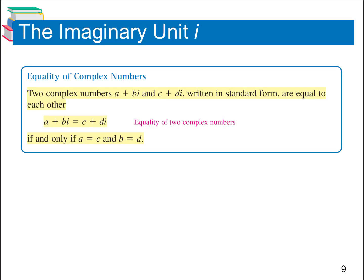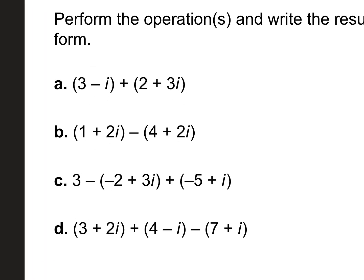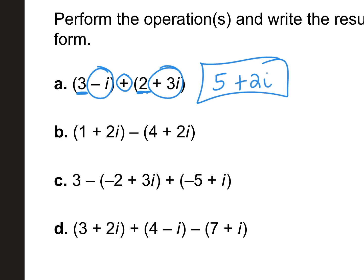Let's work through some problems. What are we doing between these two parentheses? Adding — just like you would if those i's were x's. You combine like terms. Real goes with real: 3 plus 2 is 5. Imaginary stays with imaginary: negative 1i plus 3i gives plus 2i. So your answer is 5 plus 2i. That's how you add imaginary numbers.